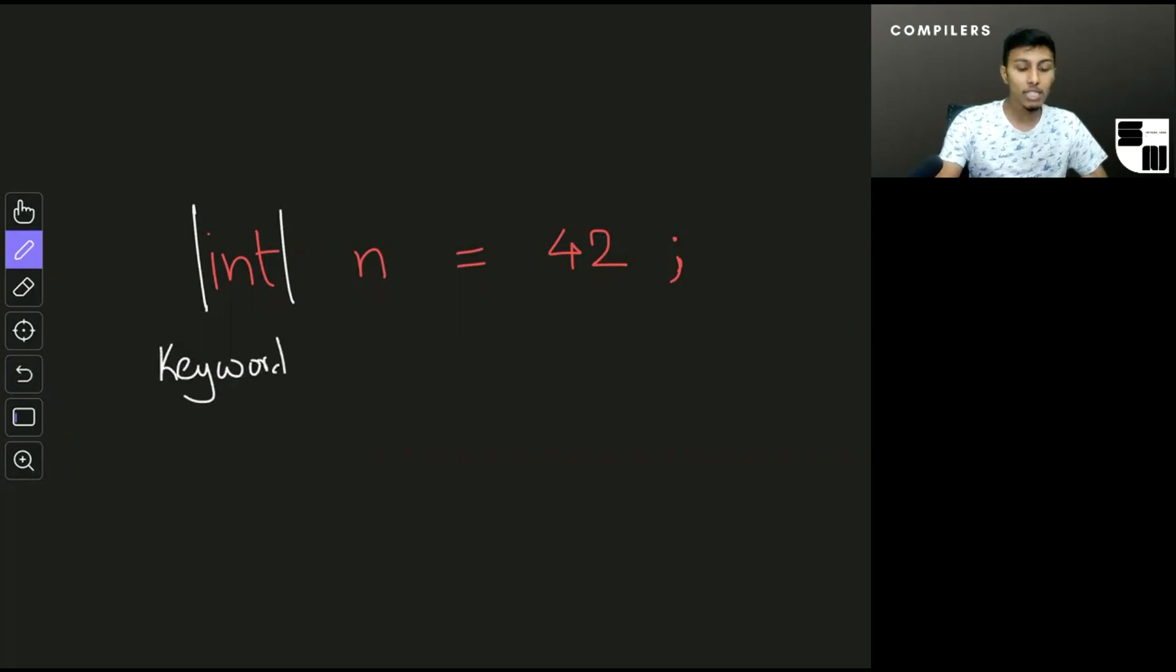Then it says the next thing right here is a white space, so I'm going to write a W here. A white space could be a space, a new line, or a tab. It categorizes this as a white space.